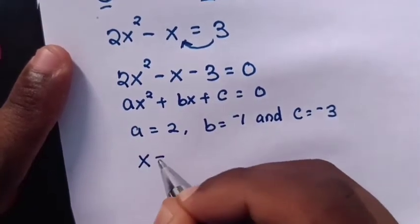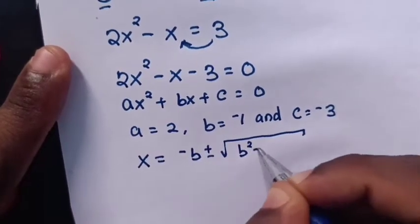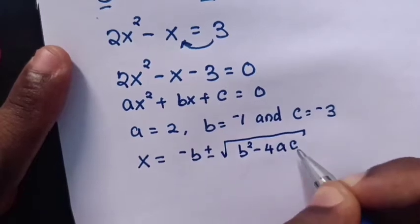To find x from the quadratic formula: negative b plus or minus square root of b square minus 4ac over 2a.